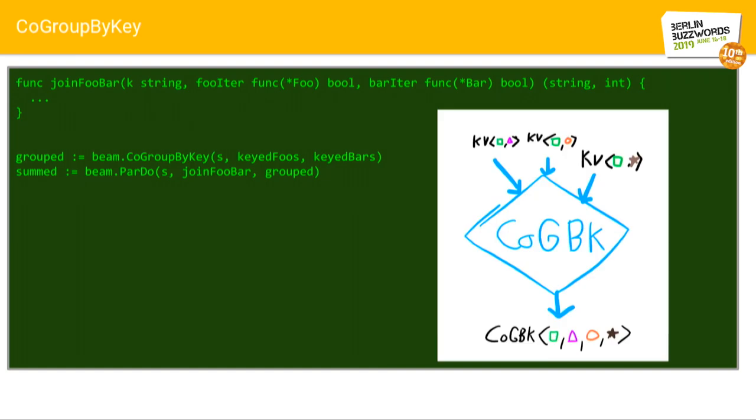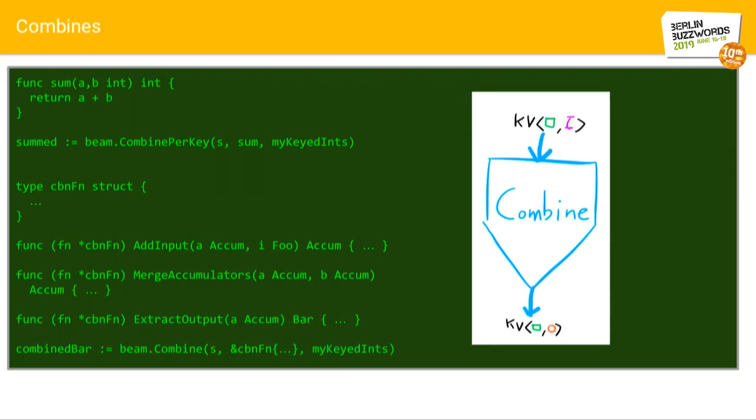Co-group by keys, there's the iterator concept again, same kind of thing we mentioned before. Combines, combines are just a bit of extra sugar on top of a co-group by key in that they let you do some mapper side combines before you have the mixing shuffle phase, which can improve efficiency significantly by avoiding sending things over the machine and sending less data to the mixer.